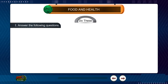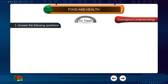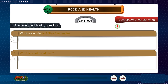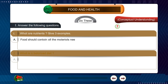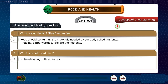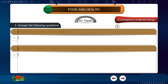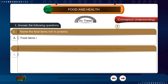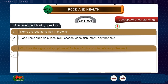Conceptual understanding. Question 1: What are nutrients? Give three examples. Answer: Food should contain all the materials needed by our body, called nutrients. Proteins, carbohydrates, and fats are the nutrients. Question 2: What is a balanced diet? Answer: Nutrients along with water and roughage form the balanced diet. Question 3: Name the food items rich in proteins. Answer: Food items such as pulses, milk, cheese, eggs, fish, meat, and soya beans are rich in proteins.